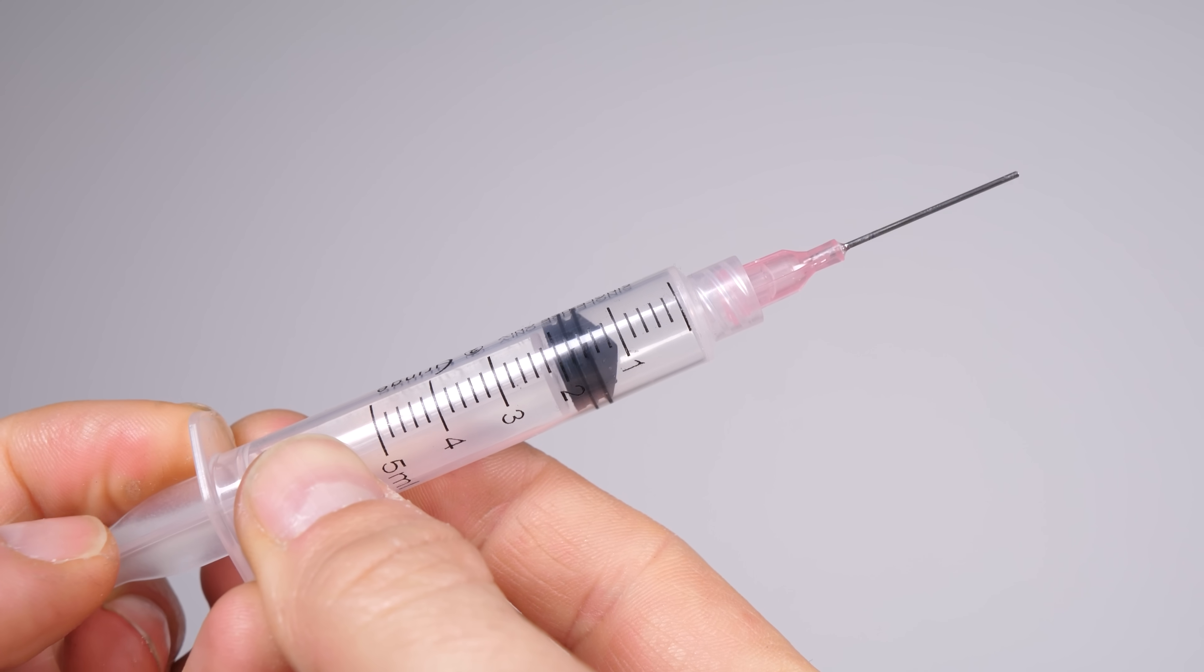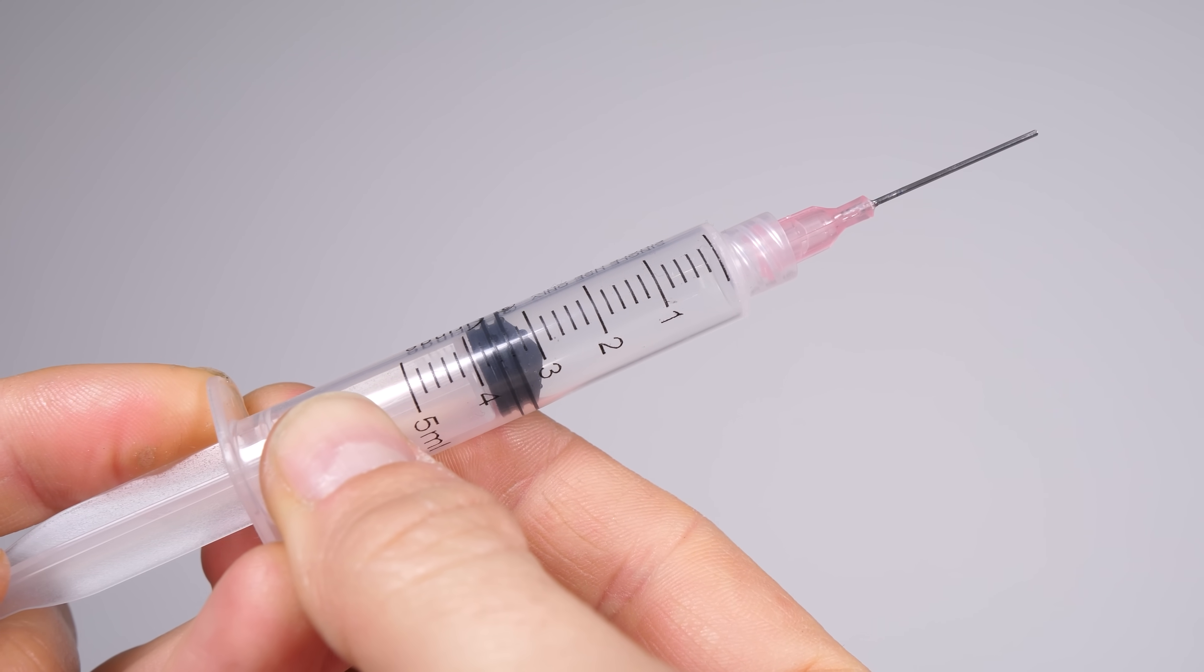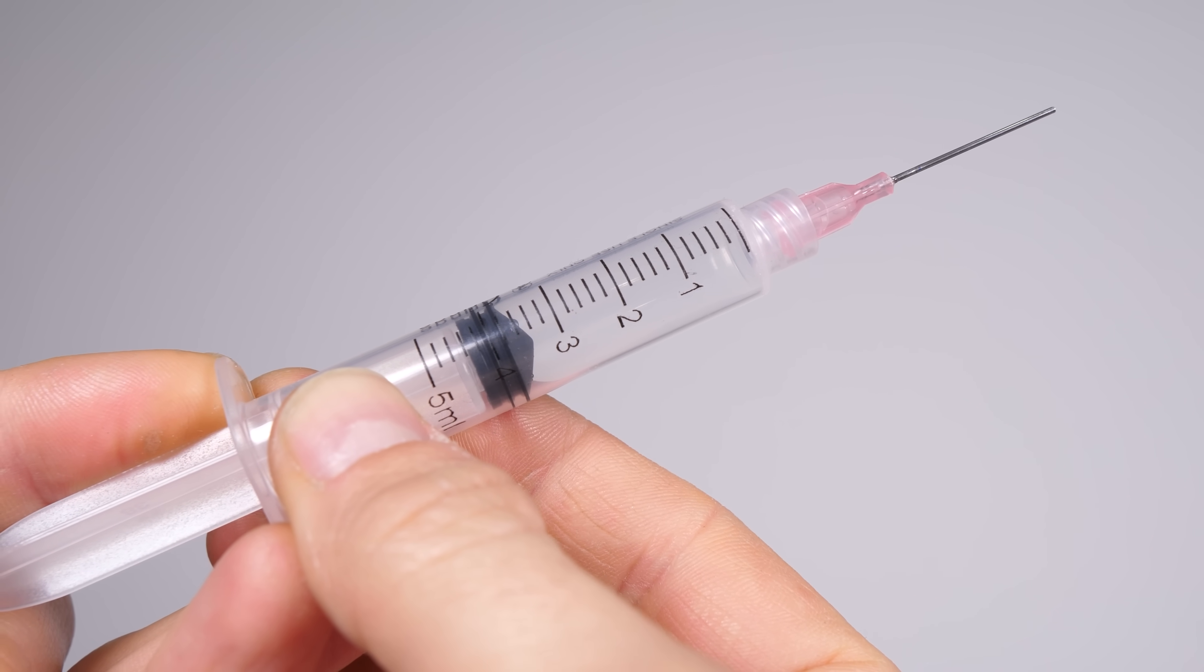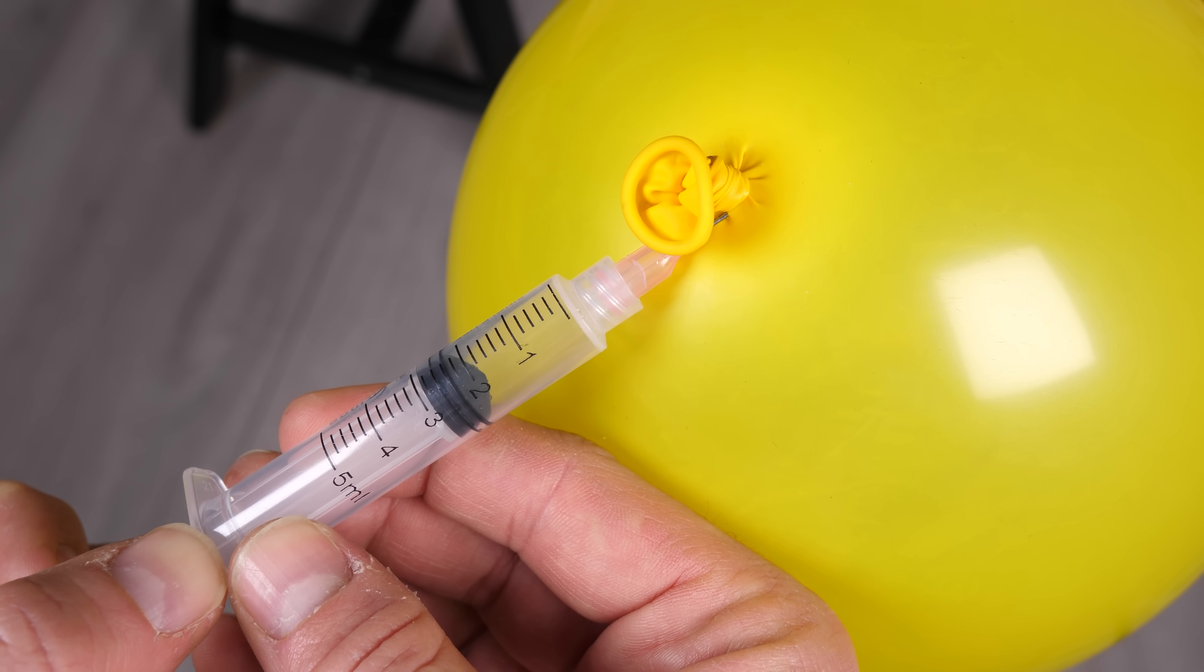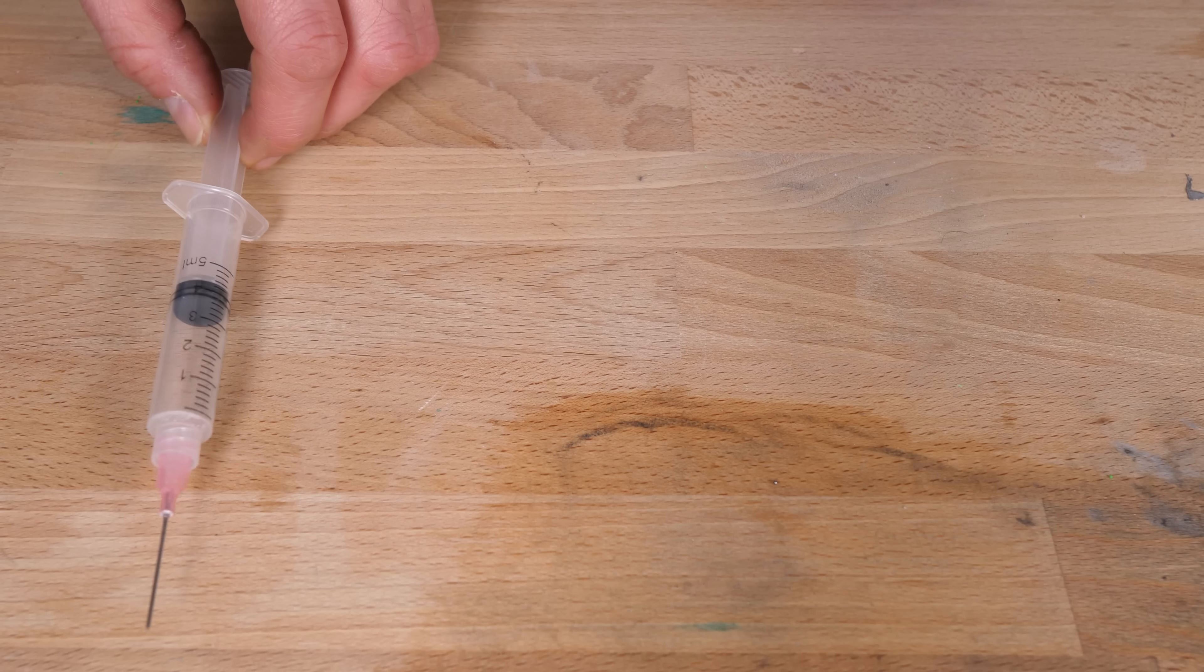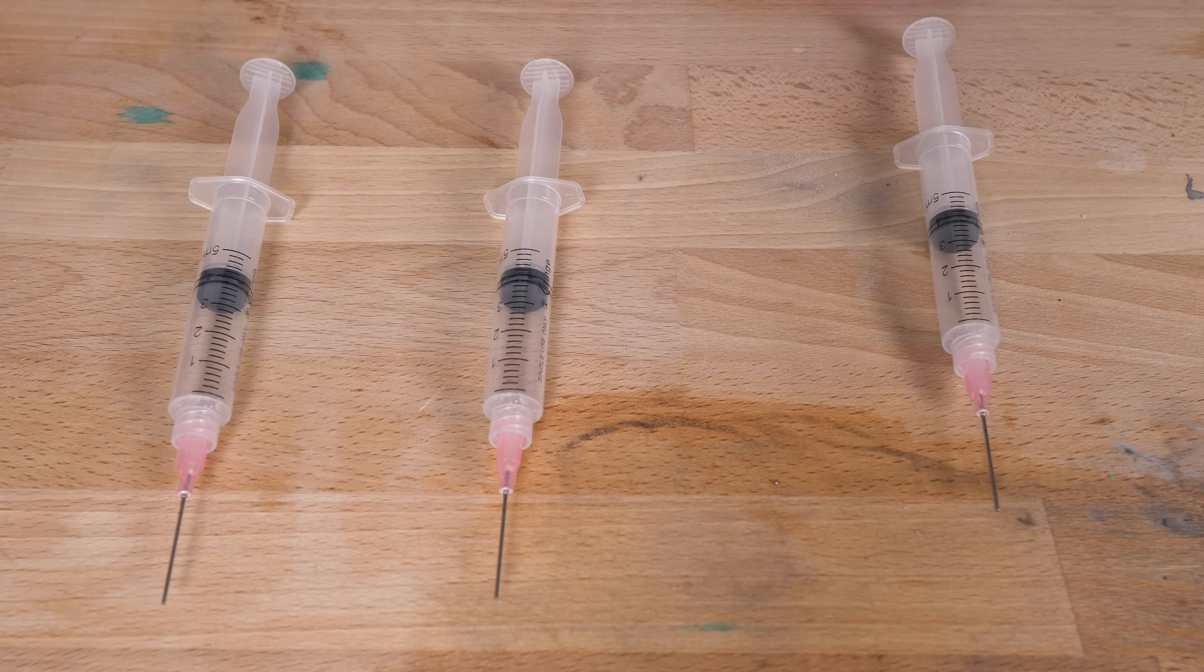Just playing with the numbers a bit. That means that this syringe that I've drawn 3.6 milliliters of air into and this one that has 3.6 milliliters of carbon dioxide and this one that has 3.6 milliliters of helium all have 100 million trillion atoms in them, regardless of the fact that they all weigh different amounts. That's weird, isn't it?